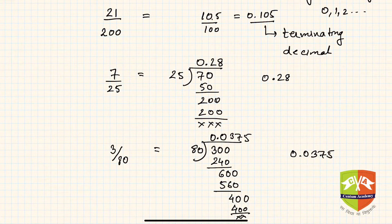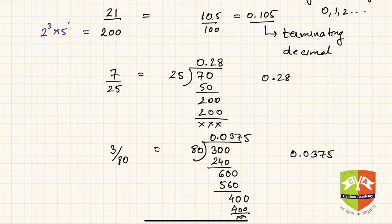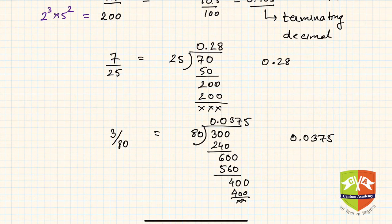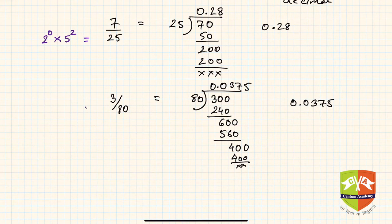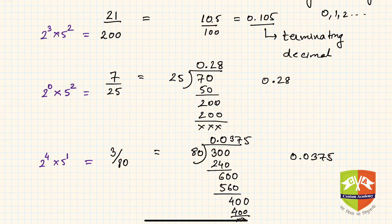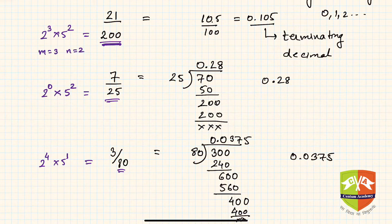Now let's look at the observation. 200 can be written as 2 cubed times 5 squared. 25 can be written as 2 to the power 0 times 5 squared. And 80 is 16 times 5, which is 2 to the power 4 times 5 to the power 1. All these denominators reduce to the form 2 to the power m times 5 to the power n, with values m=3, n=2; m=0, n=2; and m=4, n=1 respectively.